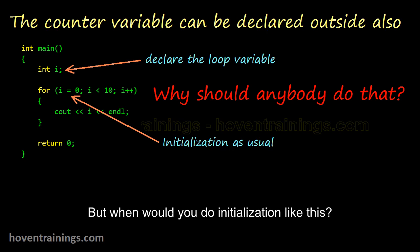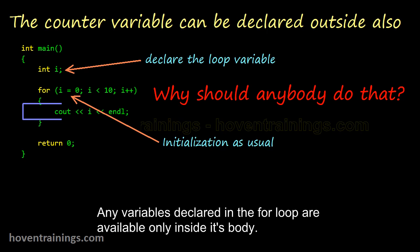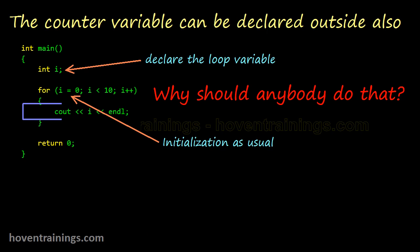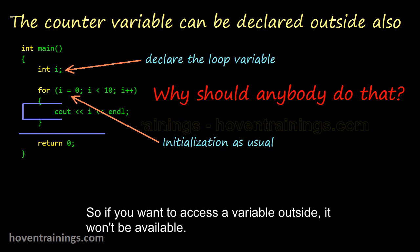But when would you do initialization like this? Any variables declared in the for loop are available only inside its body. They are not available outside. So if you want to access a variable outside, it won't be available.